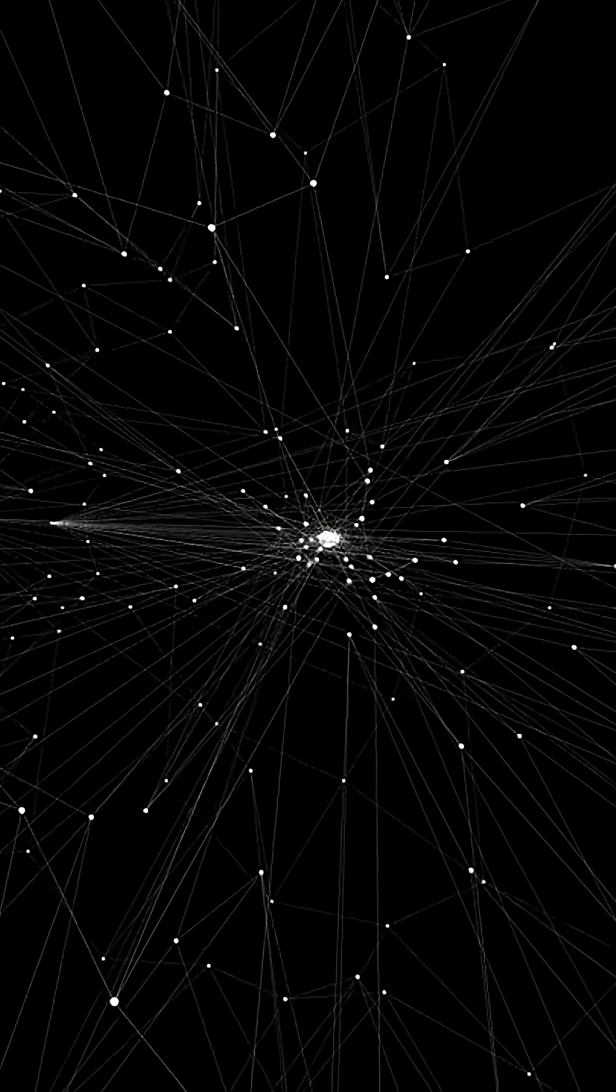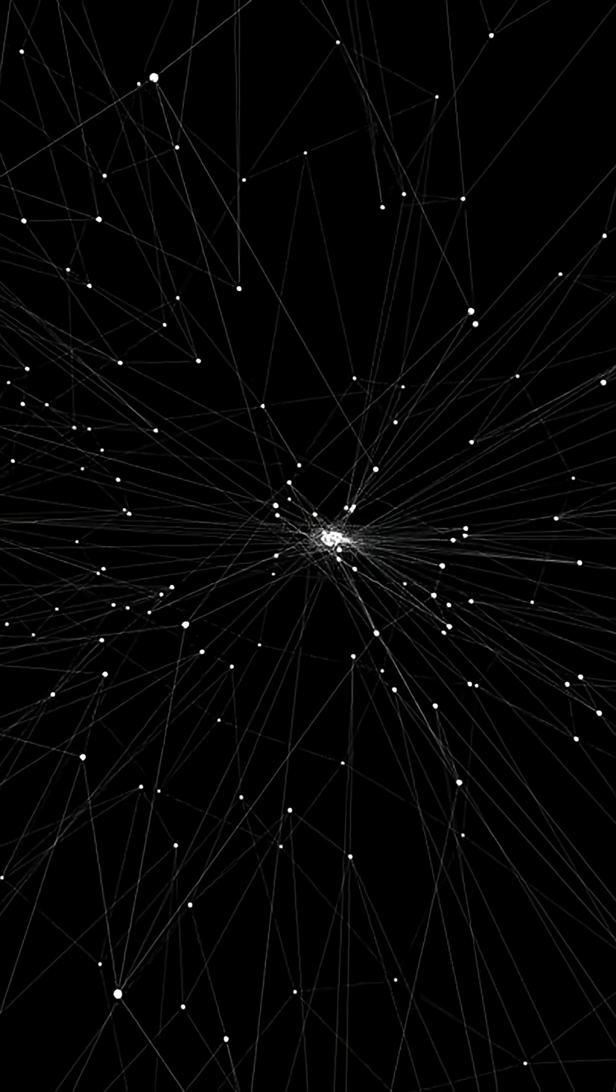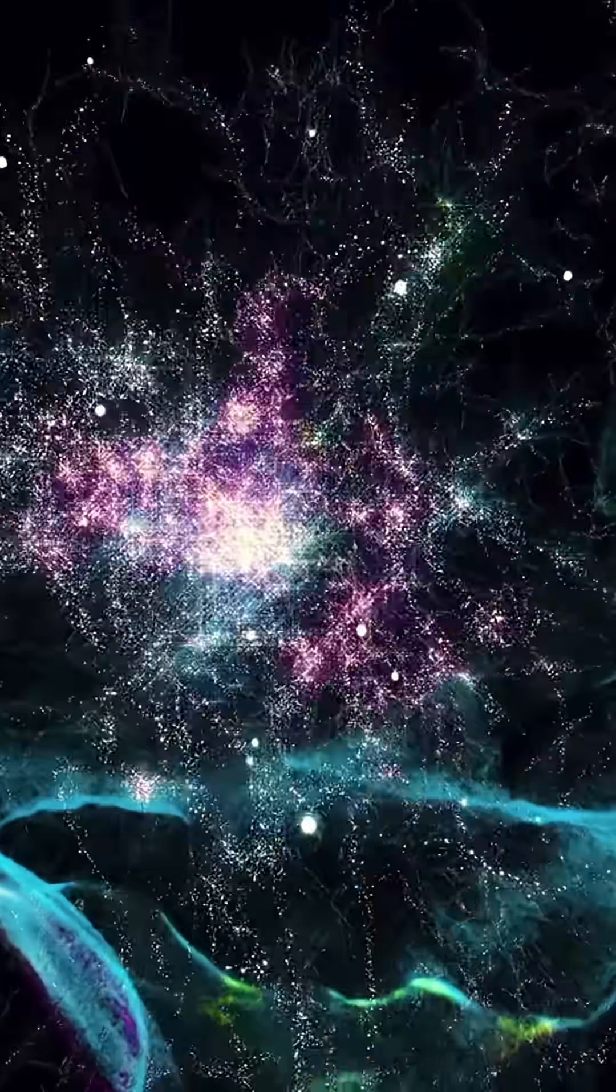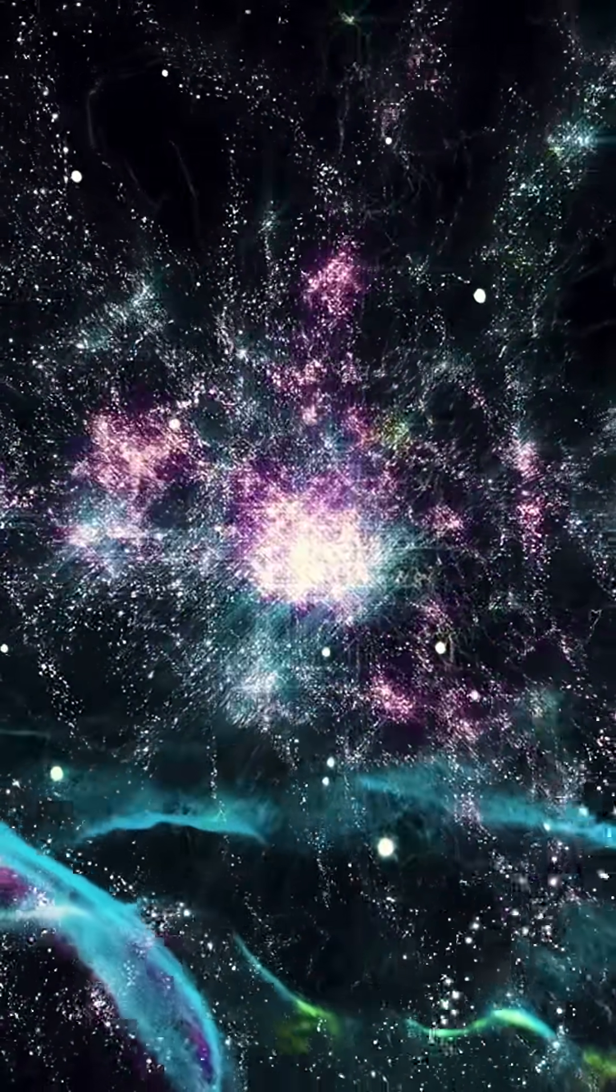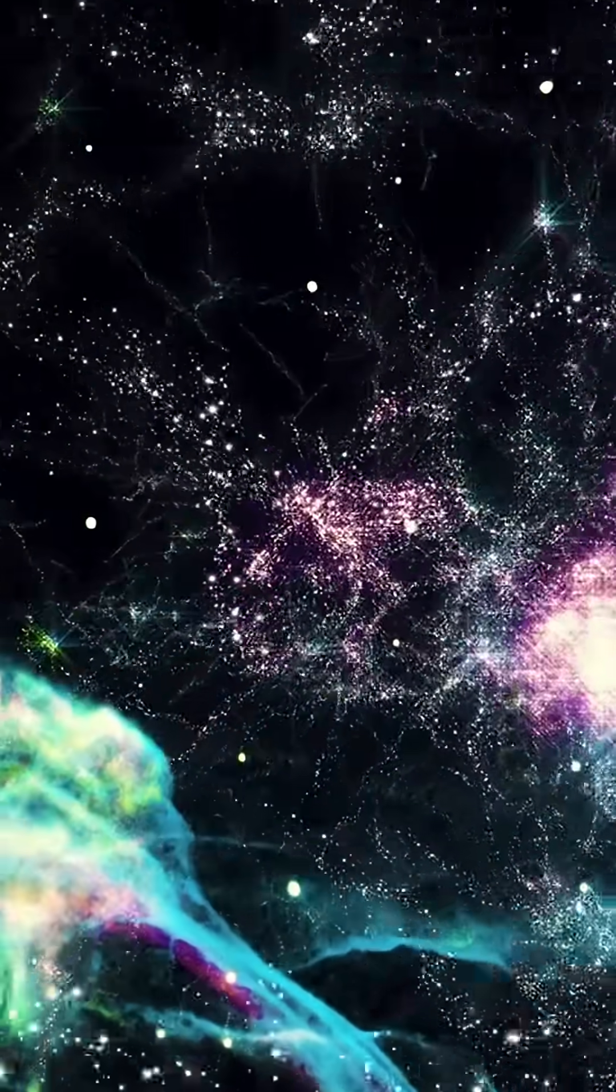The Great Attractor is an intriguing and somewhat mysterious region in the universe that has captured the attention of astronomers and cosmologists for decades. The Great Attractor is a gravitational anomaly located in the Laniakea supercluster, which is part of our local cosmic neighborhood.